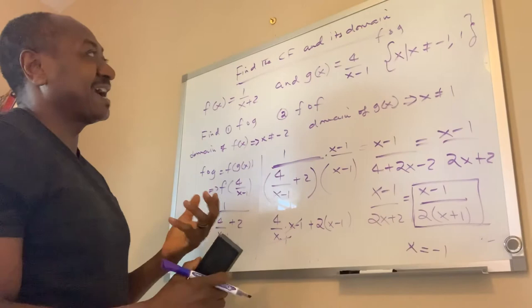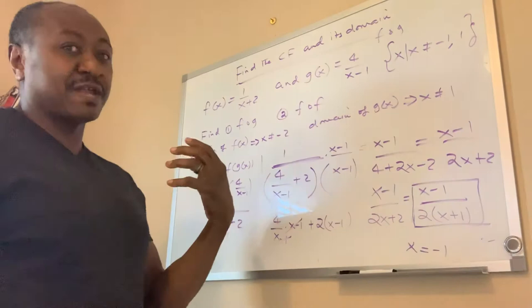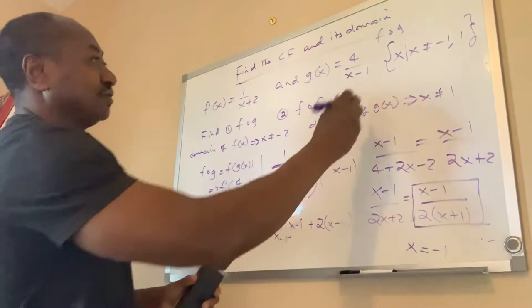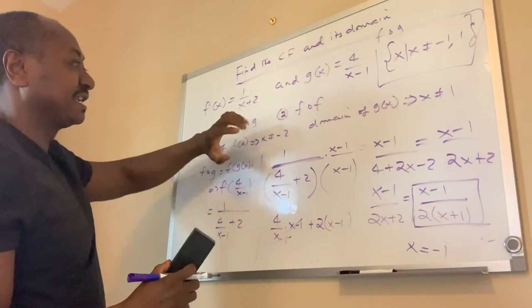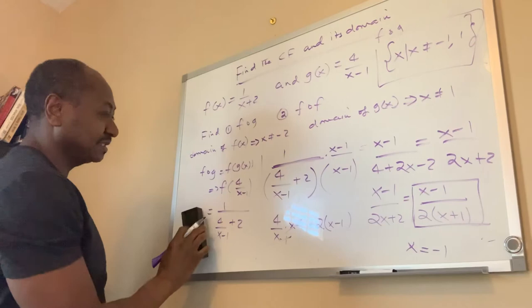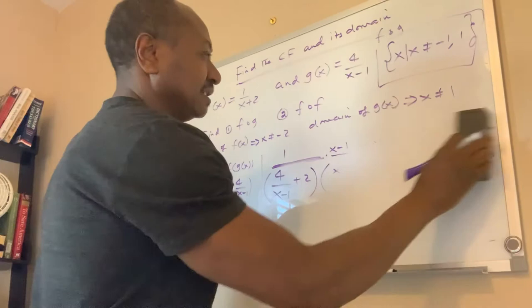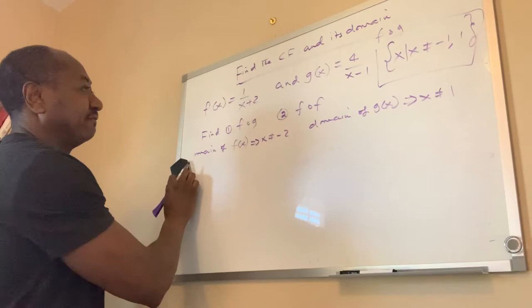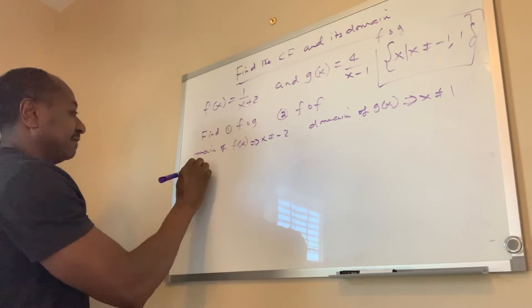That is how you find it: first solve the composite function, because you were asked to find the composite function and its domain. Now, what if you were just asked to find the domain? That's the same thing we described in the previous session. The second problem here is finding the domain of f of f, which translates to f of f of x.